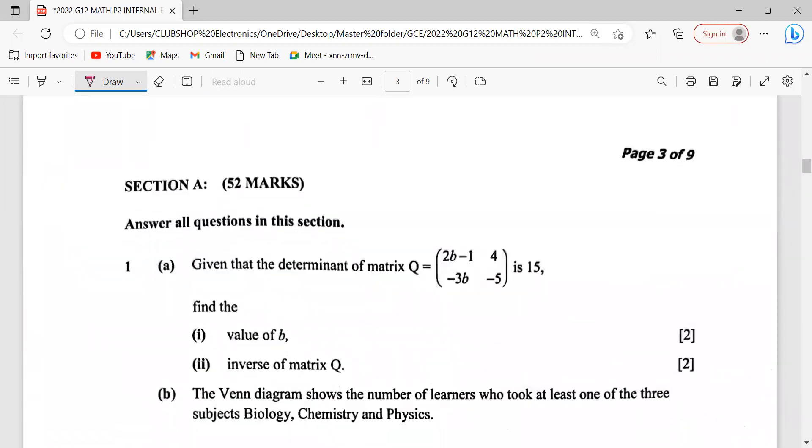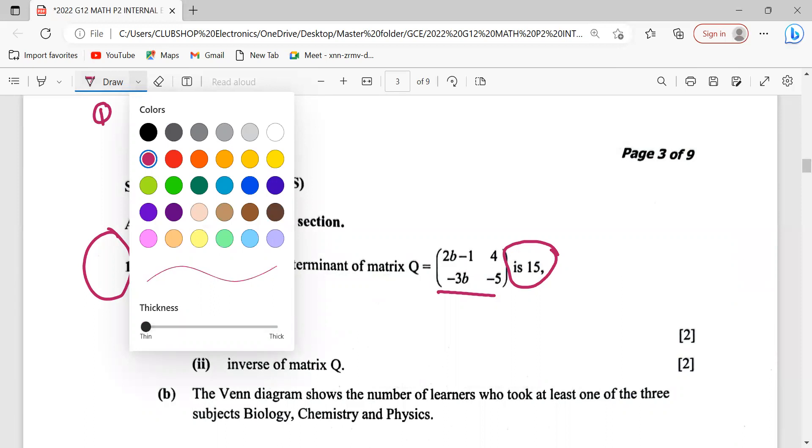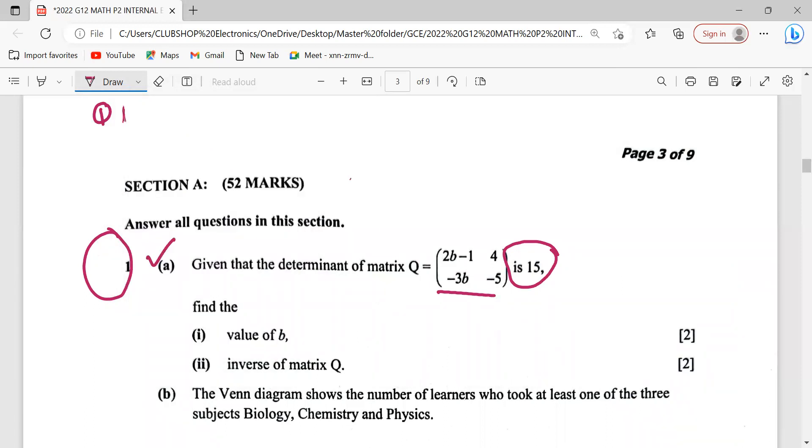Let's see. We want to attempt question 1A only. I'll write my answers here. We are saying given that the determinant of a matrix, this one is given as 15. Then let's find the value of b. The keyword here is determinant.